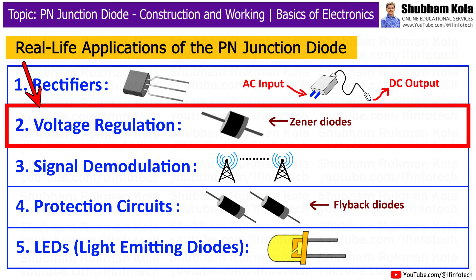Next is voltage regulation. Diodes are used in voltage regulation circuits to maintain a constant output voltage. Zener Diodes, a special type of diode, are designed to allow current to flow in the reverse direction when a certain voltage is reached. This property is used to keep the voltage across the load constant, protecting sensitive electronics from voltage spikes.